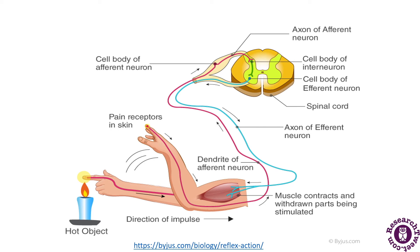This is a diagrammatic representation showing how the mechanism of reflex action takes place. Reflex action plays an important role in ensuring the survival of the organism, as it enables a quick reaction to certain situations when an organism's life could be at stake. In this example, when an individual touches a hot object, there is a pain receptor in the skin, and the arrows depicted in the diagram show the direction of the impulse.